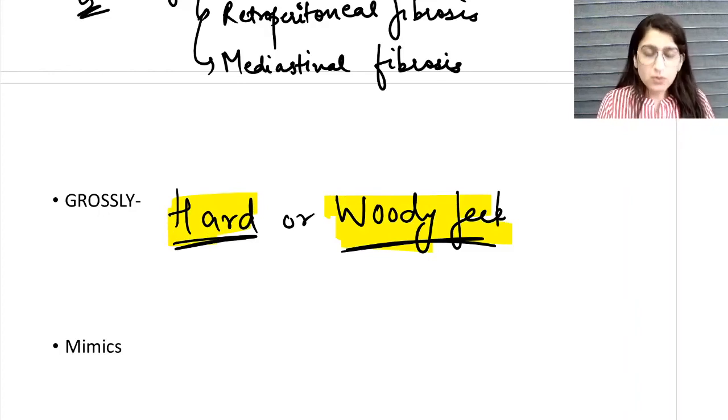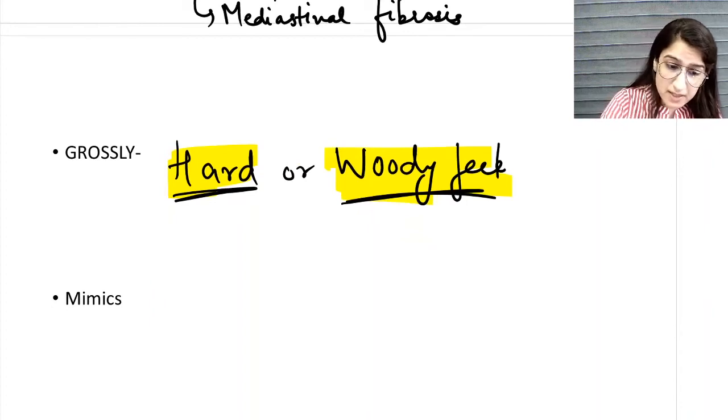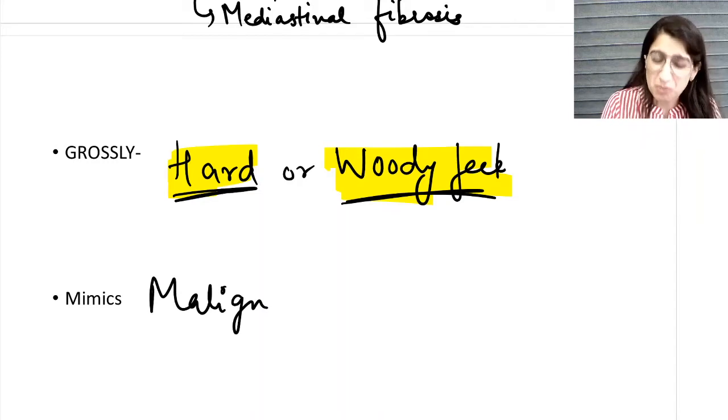feel. Because of the extensive fibrosis involving the surrounding structures and the thyroid gland itself having a hard and woody feel, it mimics all the features of a malignancy. Malignancy has all those features—being fibrotic and involving the surrounding structures. So